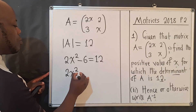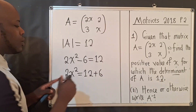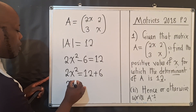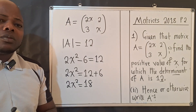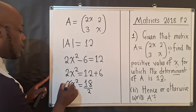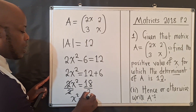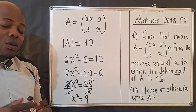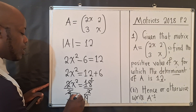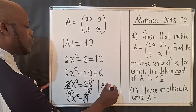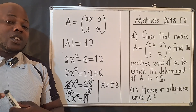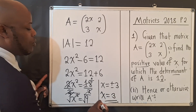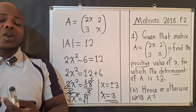Solving the equation: 2x² equals 12 plus 6, so 2x² equals 18. Dividing both sides by 2, x² equals 9. We square root both sides: x equals plus or minus 3. According to the question, we want the positive value of x, so x equals 3.